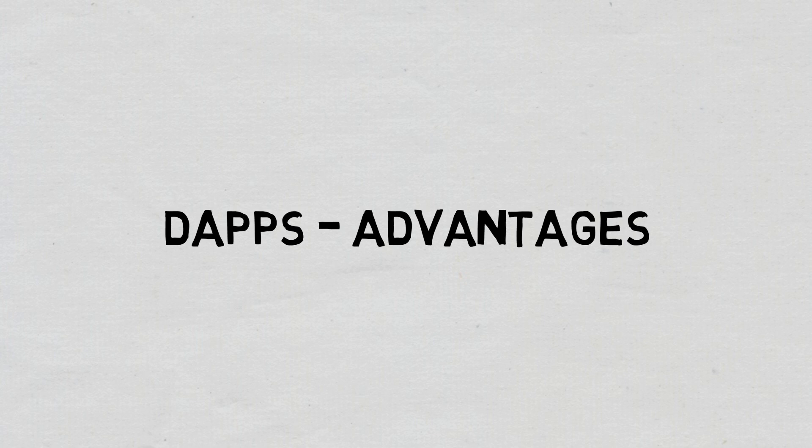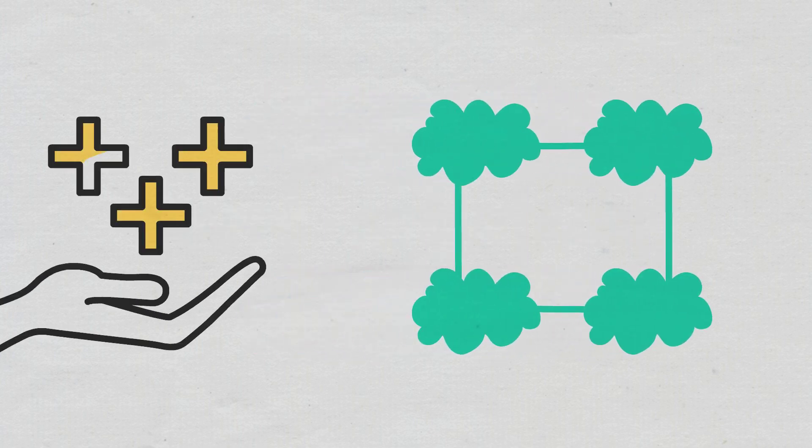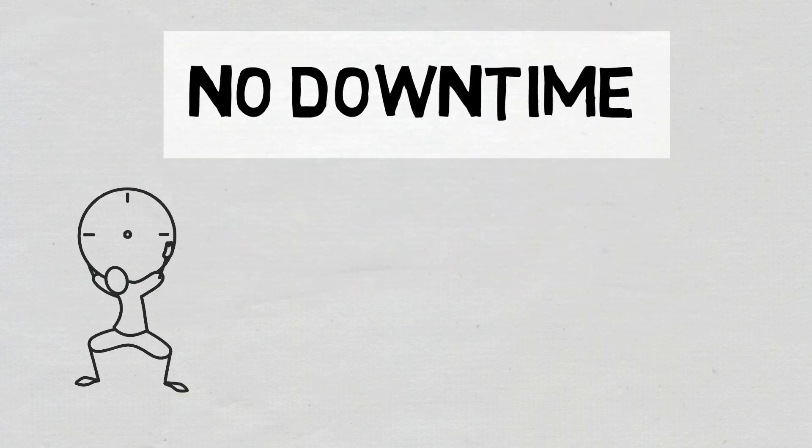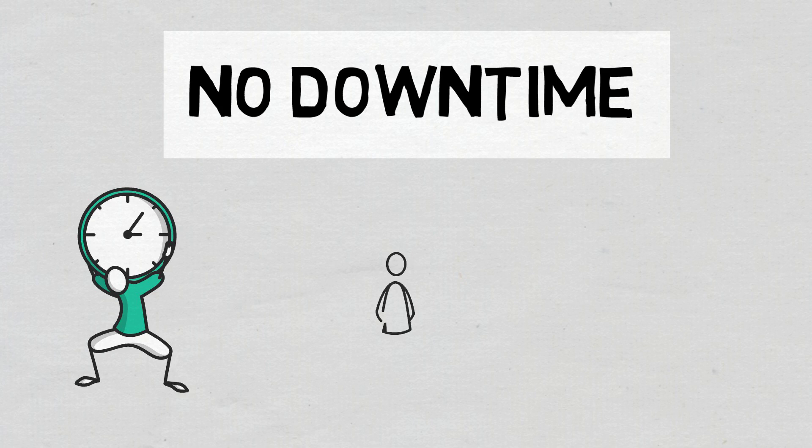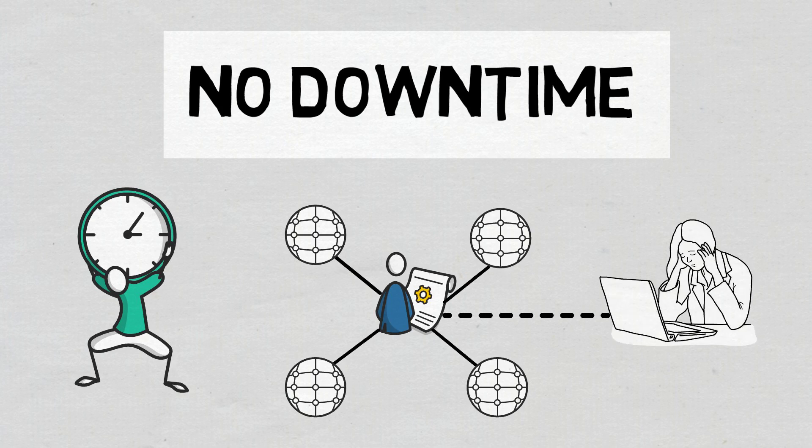DApps Advantages. Considering these basic features, there are several benefits dApps come with. No downtime. With a dApp, there is zero downtime, since the smart contracts will be available on every node in the blockchain. Such an app will work even when an individual computer or a part of the network goes down.